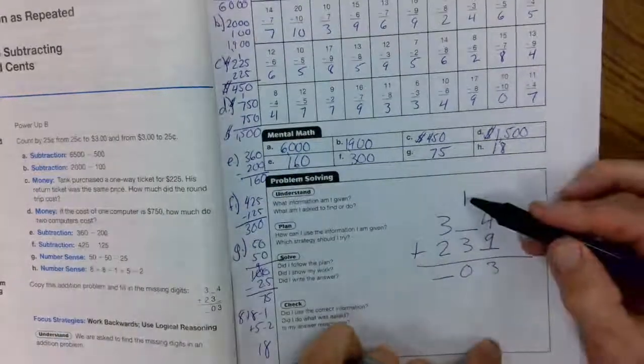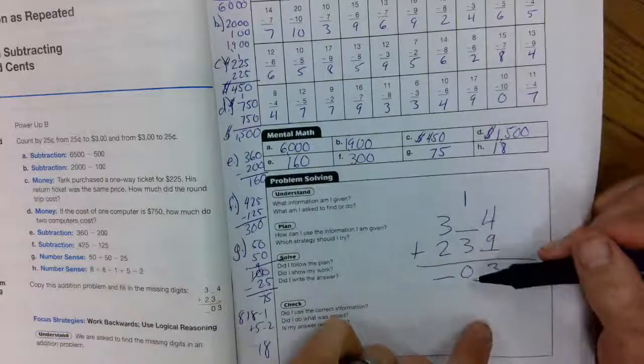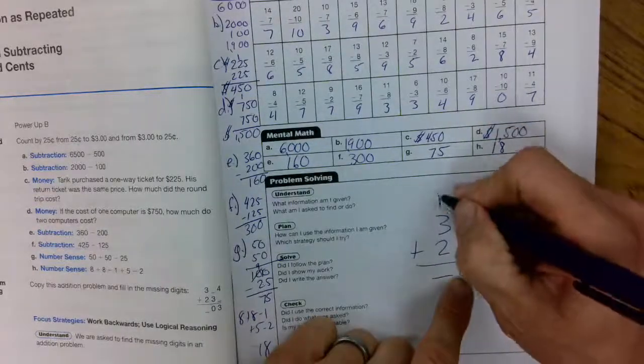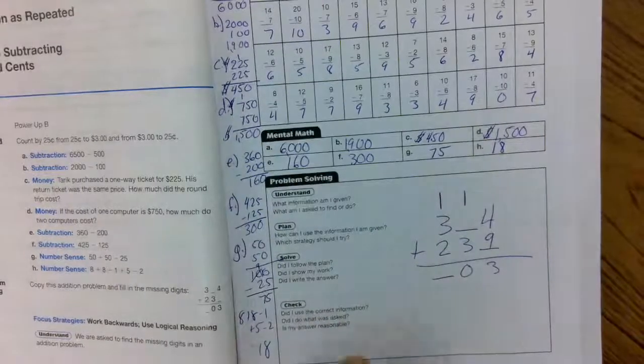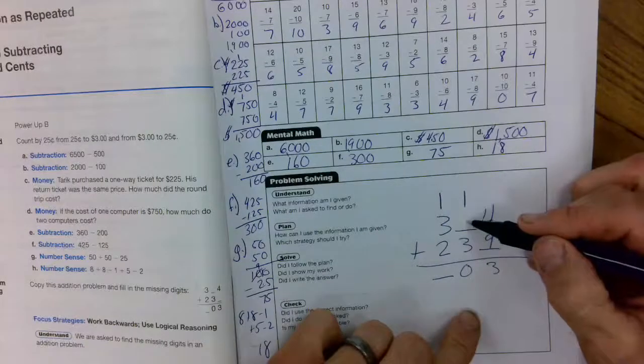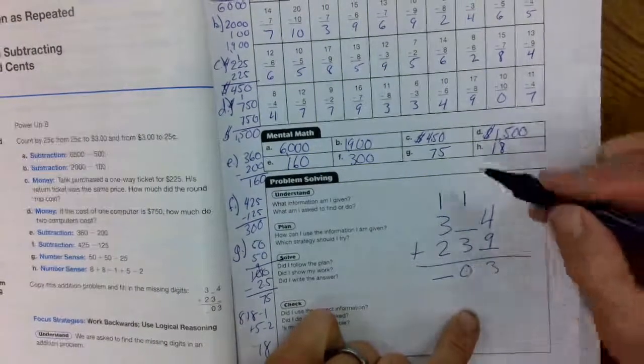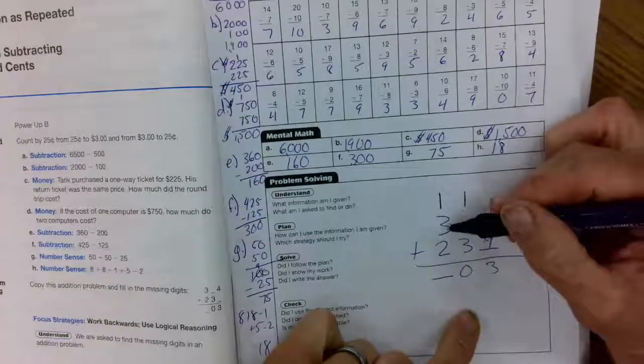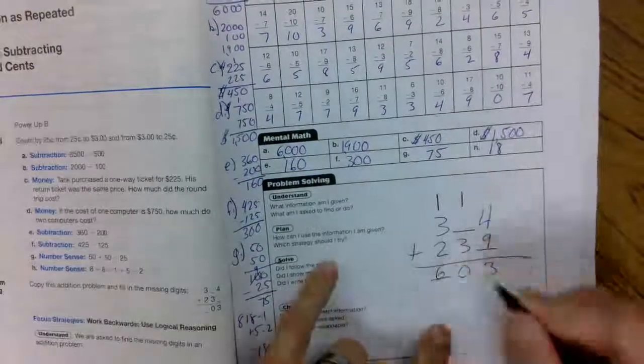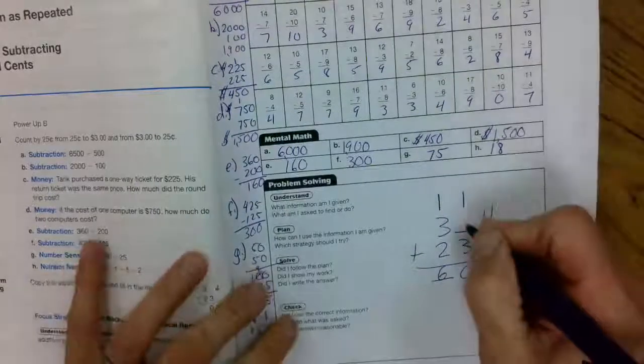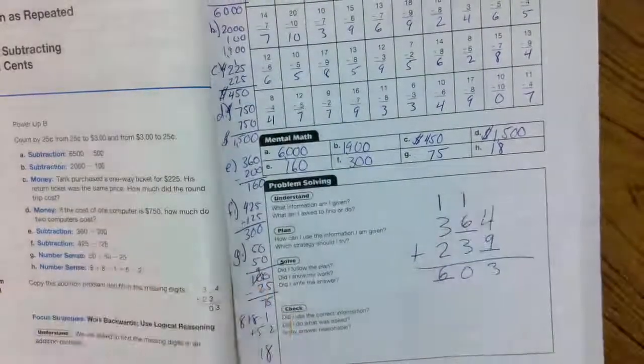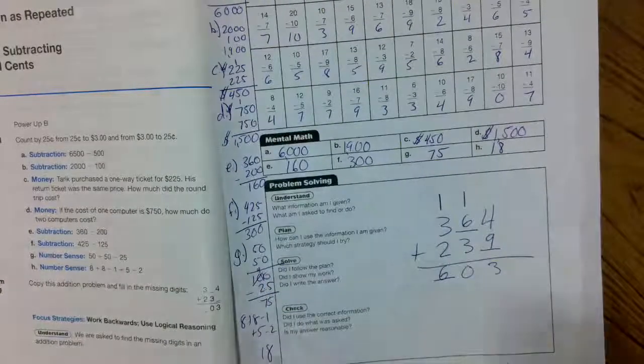3 down, 1 up. 1 plus something plus 3 equals 0. Not really 0. It's got to be a 10. So, put the 1 up there. 1 plus 6 is 7 plus 3 more is 10. 0 down, carry the 1. 3 plus 2 plus 1 is 6. And so, we have these missing numbers filled in. Box it up.